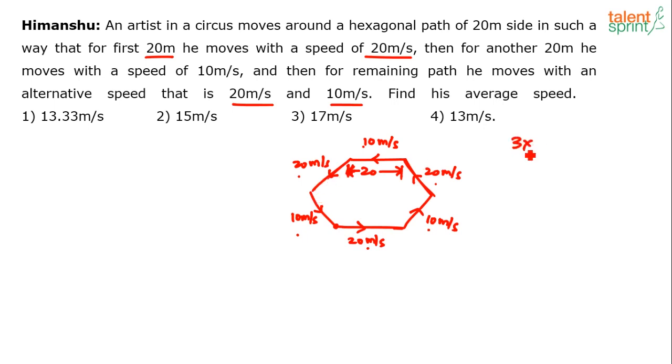Overall, I would say he has covered three sides at 20 meters per second, so basically 3 into 20, 60 meters has been covered at 20 meters per second. And then 3 into 10, which is 30 meters...